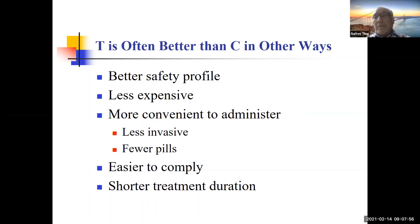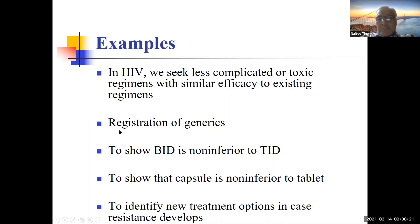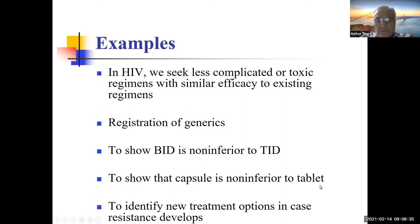Other reasons for non-inferiority trials include seeking less complicated or less toxic regimens with similar efficacy to existing regimens — for example in HIV. Sometimes we want to show twice-a-day dosing is not inferior to three times a day, or that a capsule is not inferior to a tablet, or to identify alternative options in case resistance develops. Note that generic drug comparisons are a different issue — that falls under bioequivalence.